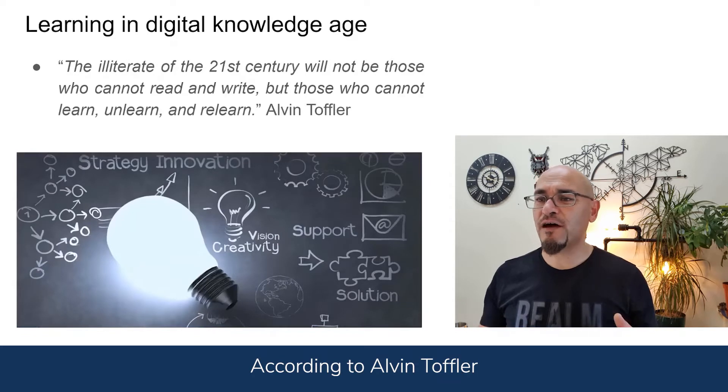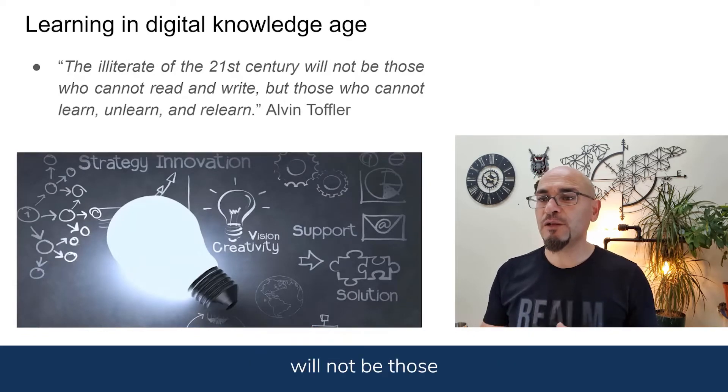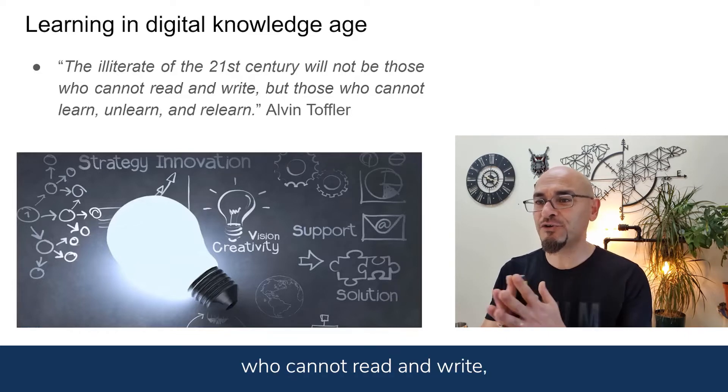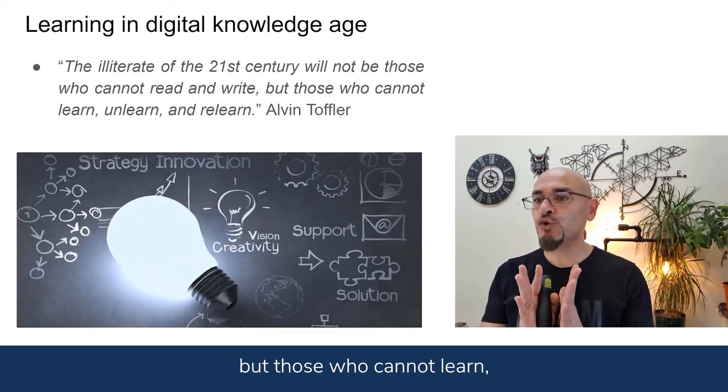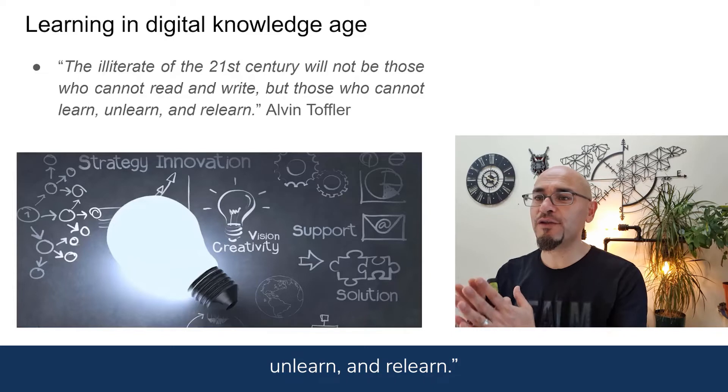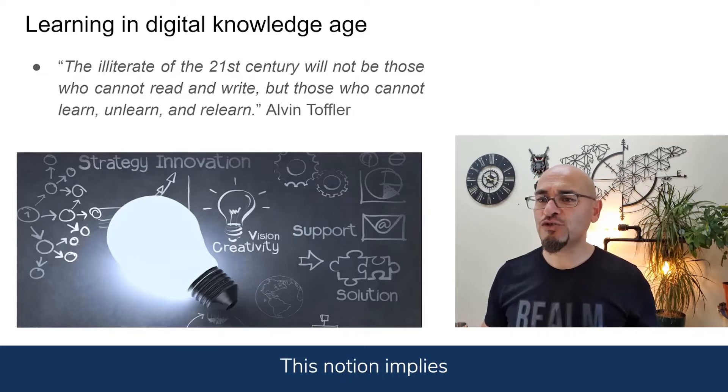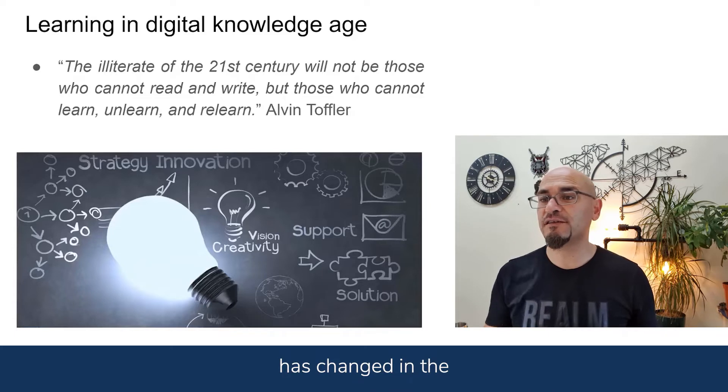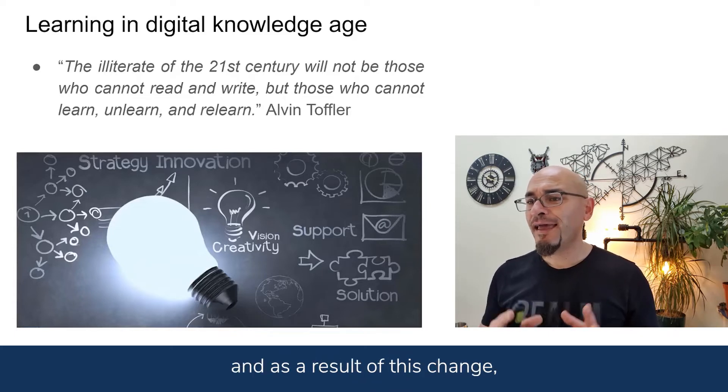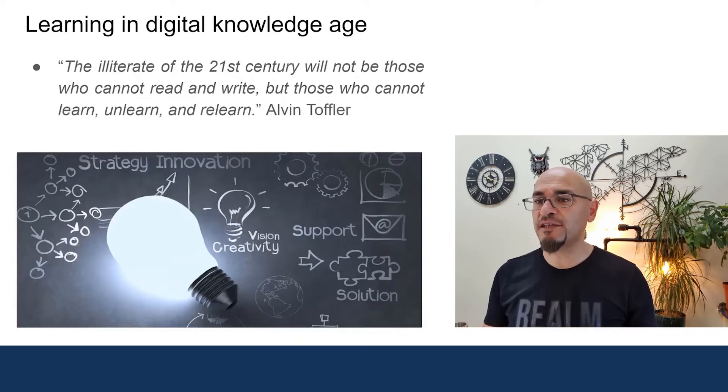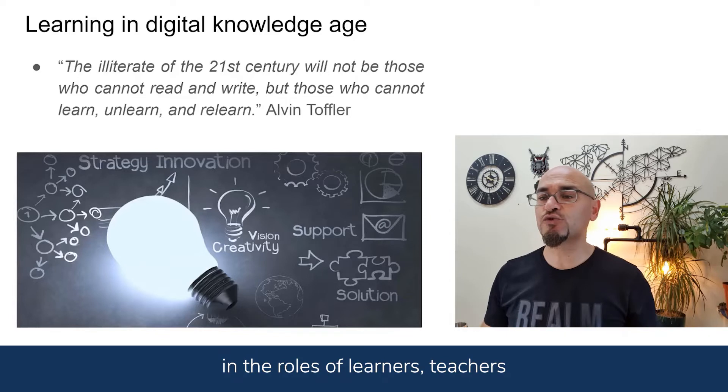According to Alvin Toffler, the illiterate of the 21st century will not be those who cannot read and write, but those who cannot learn, unlearn, and relearn. This notion implies that the social profile has changed in the digital information age, and as a result of this change, there have been changes in the roles of learners, teachers, and higher education institutions.